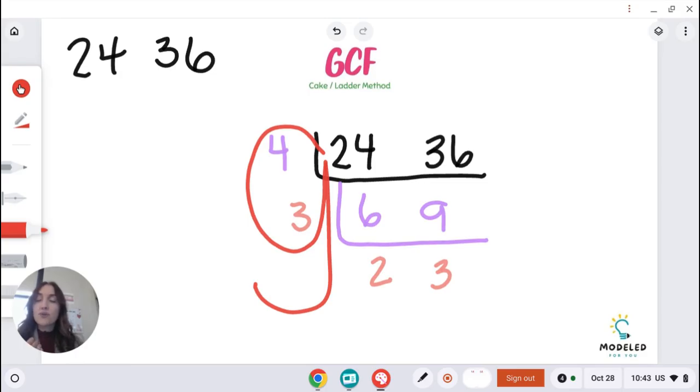What two numbers fall within my letter G? 4 and 3. So what you're going to do with these two numbers is you're going to multiply them together to get 12. Simple as that. And that is your GCF of 24 and 36. See you next time on another video by Modeled4U.